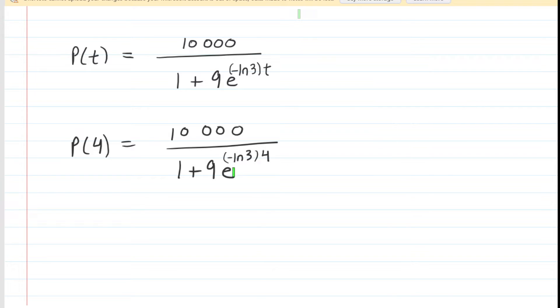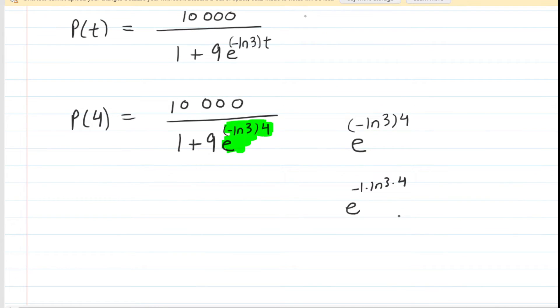Now we could punch this into a calculator to get our answer, but we're going to do a little bit of simplifying. Let's take a look at this as an aside. That negative ln of 3 is really a negative 1 multiplied by the ln of 3, which in turn is multiplied by 4. We can actually multiply the negative 1 by the 4 to make a negative 4. So we would have e to the ln of 3 multiplied by negative 4.